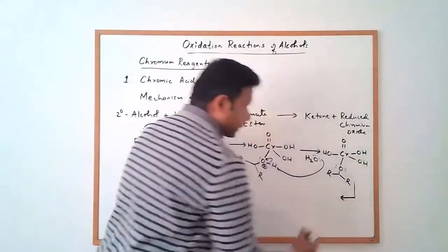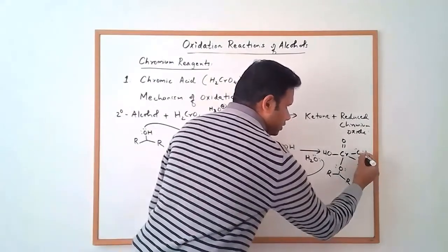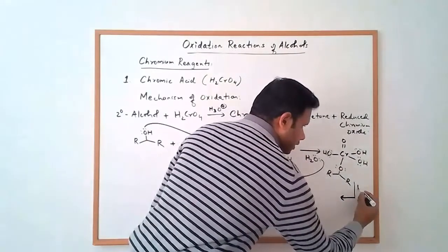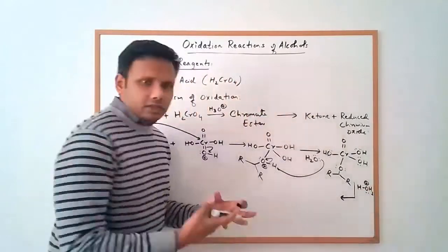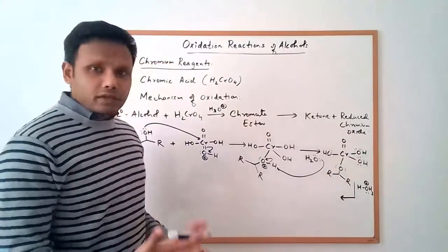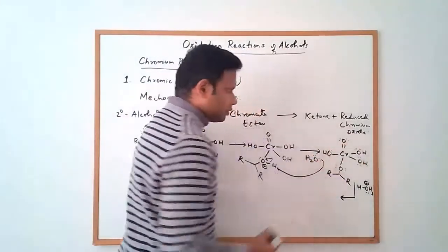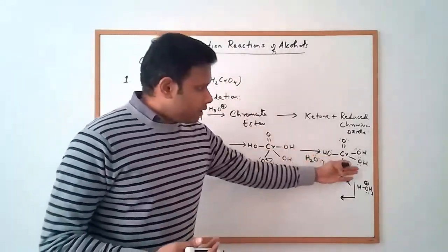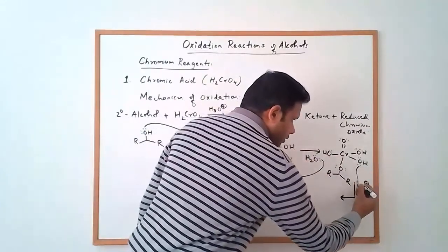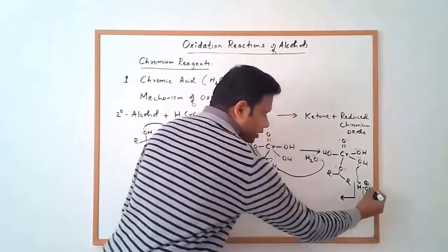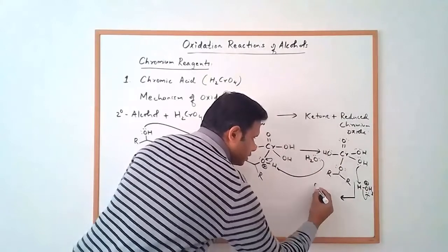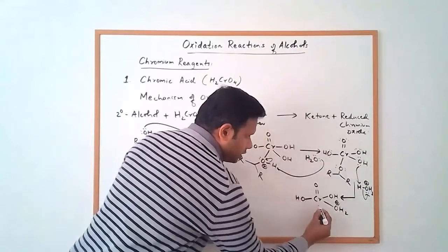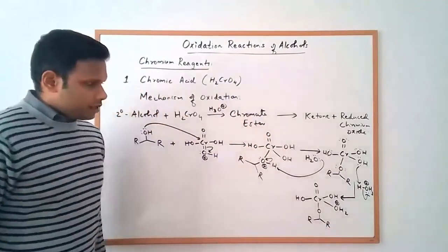From here, one of the hydroxyl groups on the chromium can get protonated, because under acidic conditions any of the oxygens can get protonated. When one of these hydroxyl groups gets protonated — all oxygens have lone pairs, so there will be an equilibrium among several protonated species — that protonated hydroxyl becomes a good leaving group, and we get an intermediate that leads us to the chromate ester.